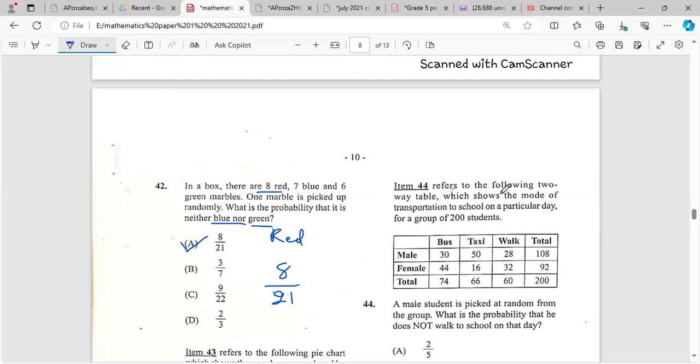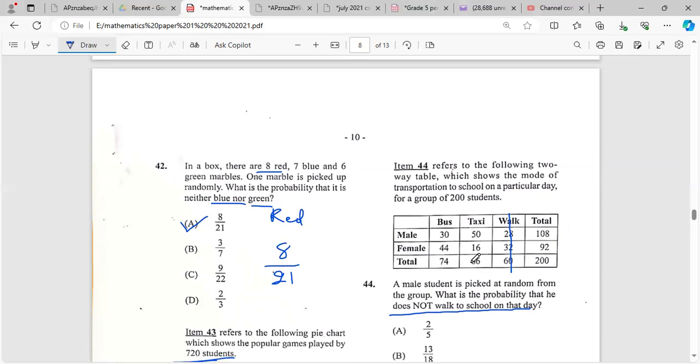Item 44 refers to the following table which shows mode of transportation to school on a particular day for a group of 200 students. If a student is picked at random from the group, what is the probability that he does not walk? So basically not walk means taxi or bus and it's a male. So we're looking at male only. That would be 30 plus 50, which is 80 out of a total of 108.